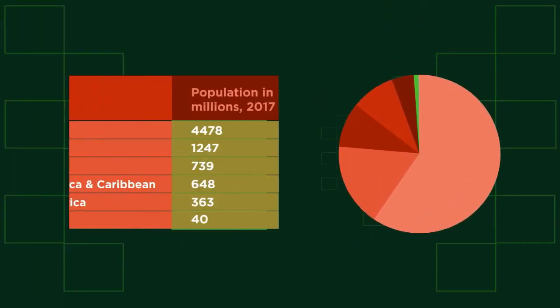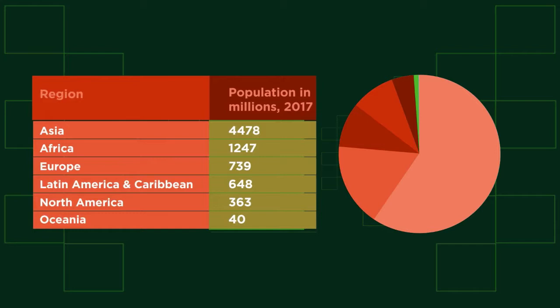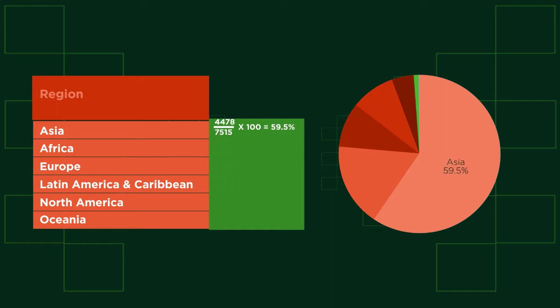Pie charts often also have the percentage written on them. What percent of the world population does each region contribute? So we go back and turn the populations out of the total world population into a percentage. Nearly 60% of all people live in Asia. Can you work out what percentage of people live in each of the other regions? Pause the video, find the percentage and click play when you're ready. Did you get them right?